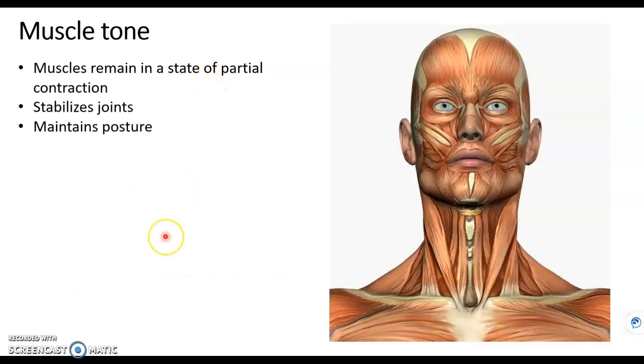So in the previous video we saw that we can increase the strength of a contraction by recruitment, which means use more motor units. And we also saw in the last video that the length-tension relationship is important for a strong contraction. In this video we saw that we can produce a stronger contraction by wave summation, meaning sending stimuli in before the muscle is able to relax.